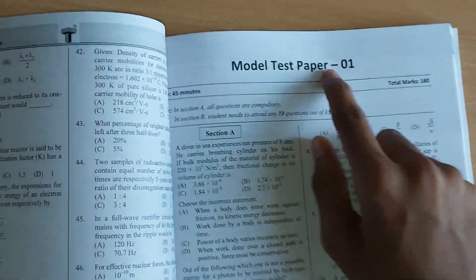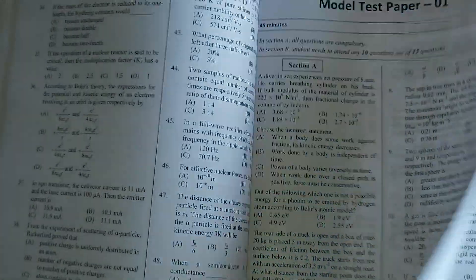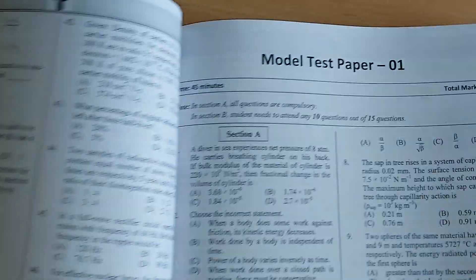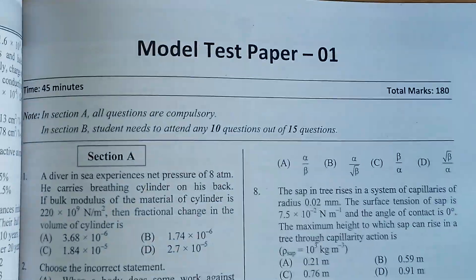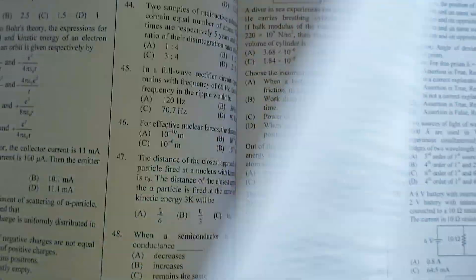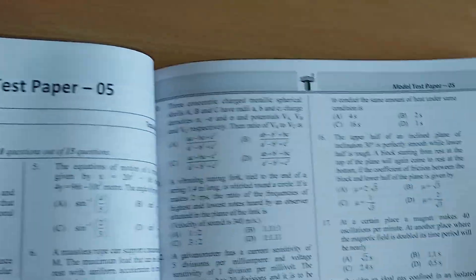We have also model test papers. These are as it is like NEET final examination. We have 45 questions and the duration is 45 minutes. Total marks allotted are 180. We have total model paper number one, two, three, four, five.